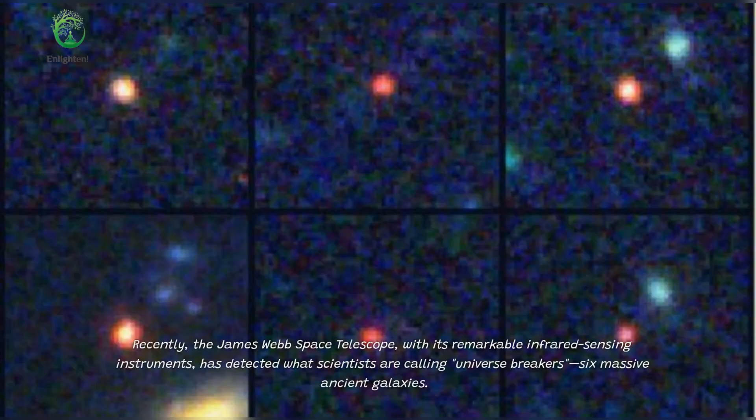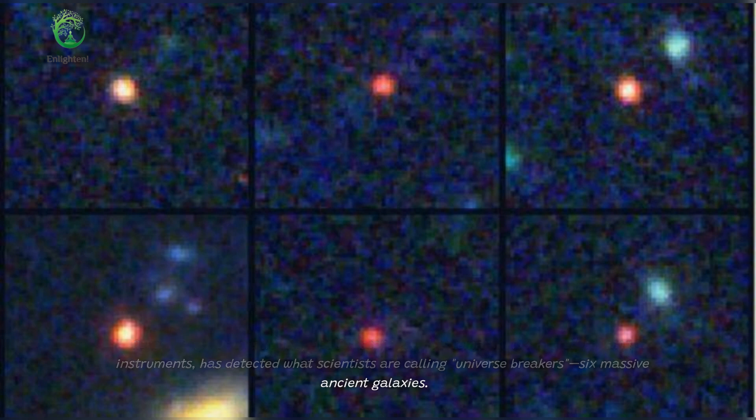Recently, the James Webb Space Telescope, with its remarkable infrared sensing instruments, has detected what scientists are calling universe breakers, six massive ancient galaxies.